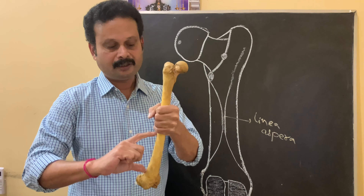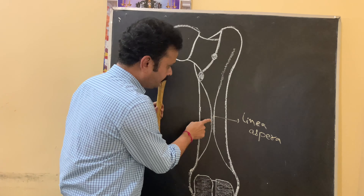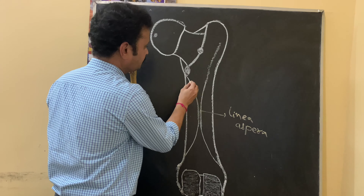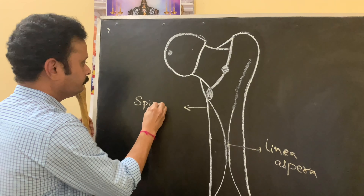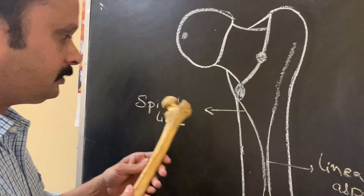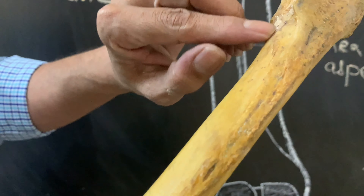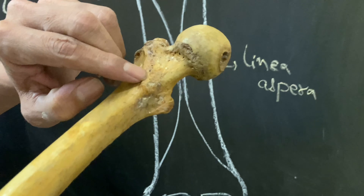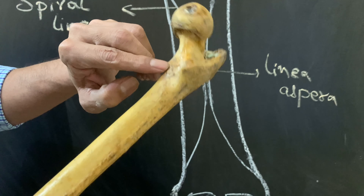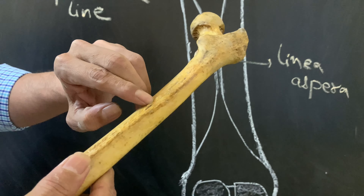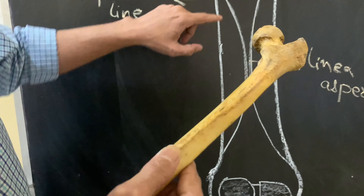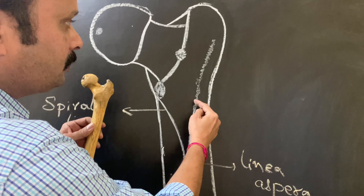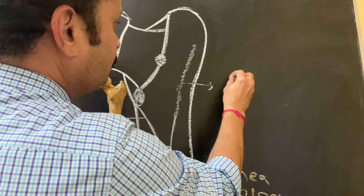In the upper one third and lower one third, because of the splitting of the linea aspera, the medial lip of the linea aspera continues upwards as the spiral line. This spiral line extends as a continuation from the lower part of the intertrochanteric line of the upper end. The intertrochanteric line continues downwards as the spiral line and becomes the medial lip of the linea aspera. This spiral line is considered as one border.